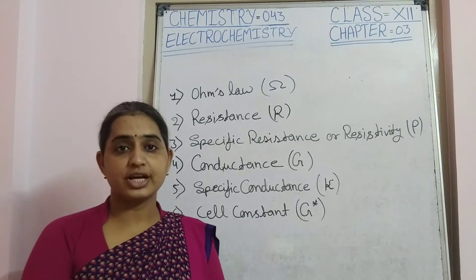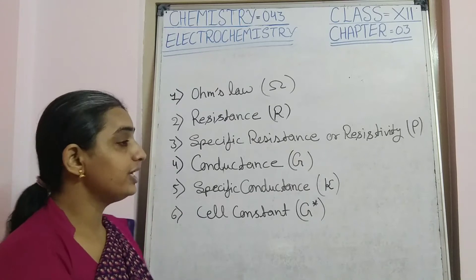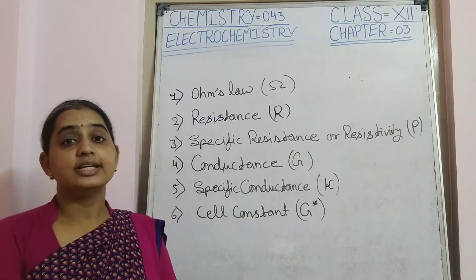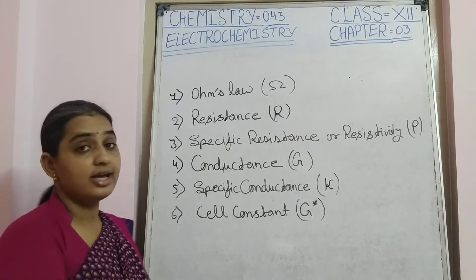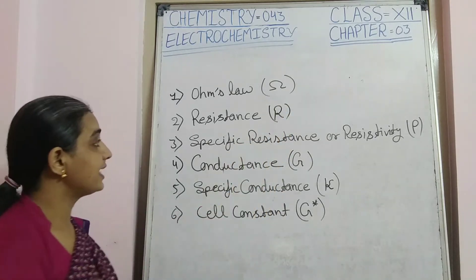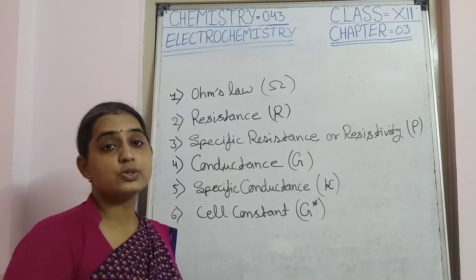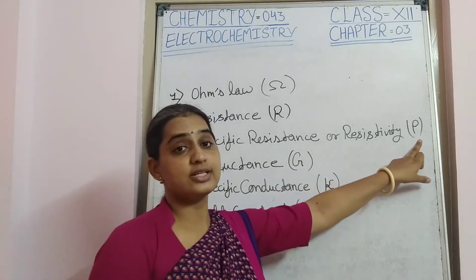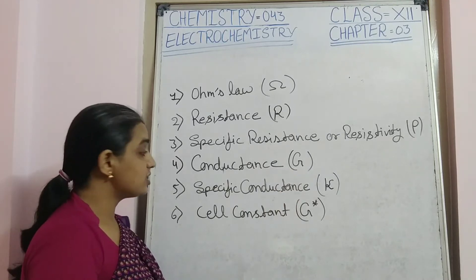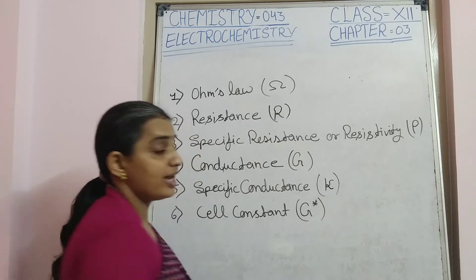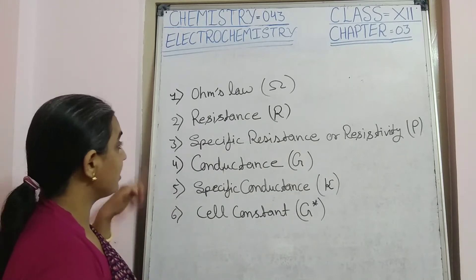Namaskar all the students. I am Mishra or Shikawat and today I am going to teach the next topics in Chapter 3 in Electrochemistry. The topics are related to electrolytic conductance. The topics we will discuss are: first, Ohm's Law; second, resistance (symbol R); third, specific resistance or resistivity (symbol rho); fourth, conductance (symbol G); fifth, specific conductance (symbol kappa); and sixth, cell constant. We will discuss these topics one by one.